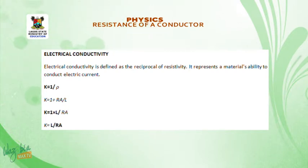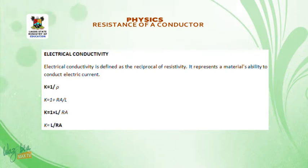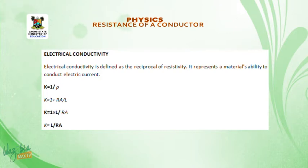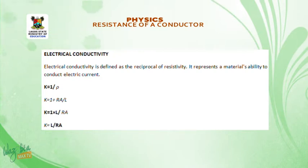When we say reciprocal, that means k — electrical conductivity — equals 1 divided by resistivity (ρ). From there: k equals L divided by (R × A), where L is the length, R is resistance, and A is the cross-sectional area. That is the formula for electrical conductivity: k equals L divided by R times A.